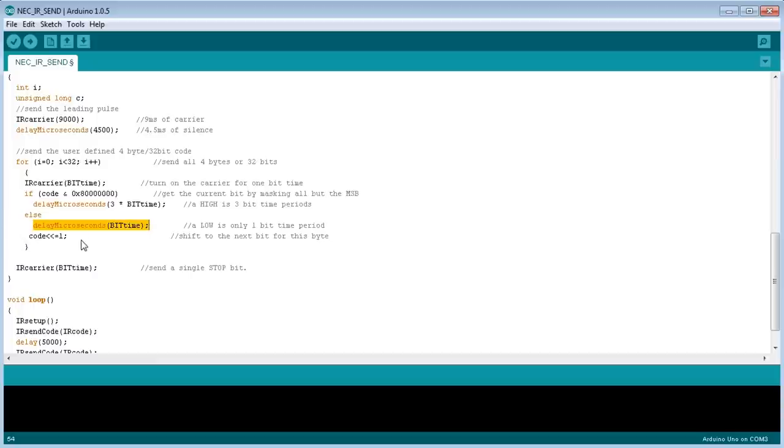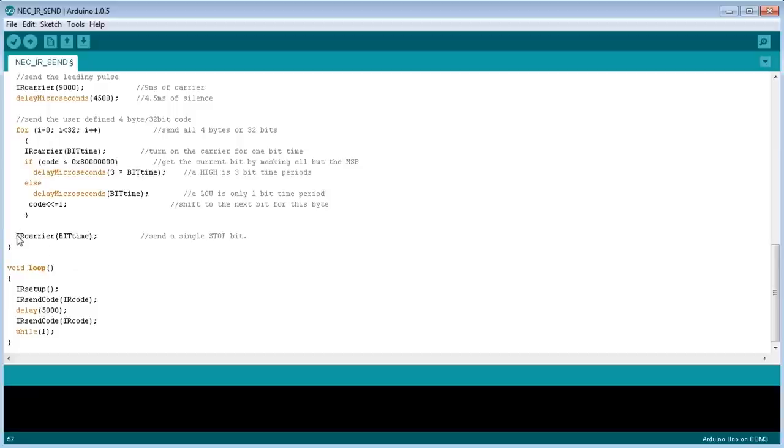And one thing I forgot to mention on the oscilloscope capture is I also noticed a stop bit at the end of it. So it actually had a 33-bit on there, just a stop bit of 1-bit time. So I've added that in there at the end. And then I've just got a main routine here. All it does is calls the setup, defines the pins, and then it sends my infrared code to switch the record mode of my camera on. It waits 5 seconds, and then I send the code to stop recording. Easy.